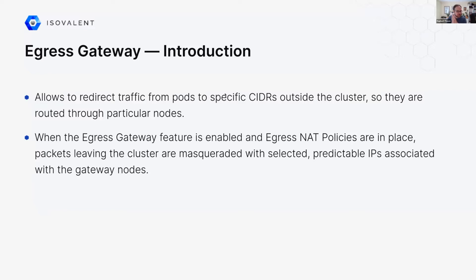So what is this? The egress gateway feature in Cilium was introduced in Cilium 1.10. The goal is to allow redirecting traffic from specific pods to specific CIDRs outside of the cluster, so that they're routed through specific nodes of the cluster. When the egress gateway feature is enabled, you can use specific resources called egress NAT policies. These egress NAT policies allow you to specify how to route packets outside the cluster so that they are masqueraded with selected predictable IPs associated to the egress node.